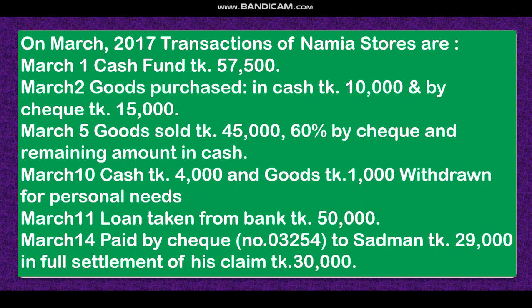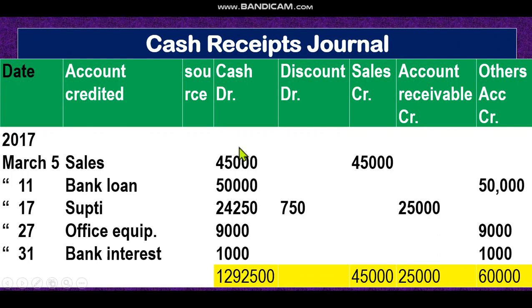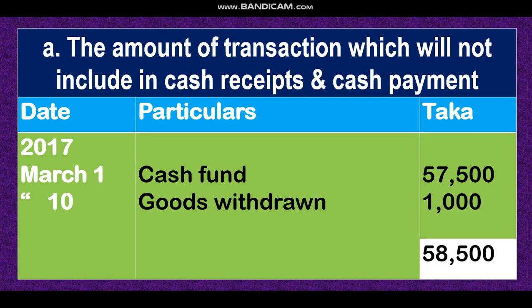Cash fund will not be recorded. Good purchase in cash means cash goes out, so it will not be in the cash receipt journal. On March 5, goods sold 45,000 — sixty percent by check and the remaining in cash — means we receive cash money. Account name is sales; cash debit, sales credit. In the cash column and sales column we write 45,000 because account credited is the sales account.